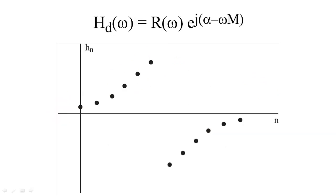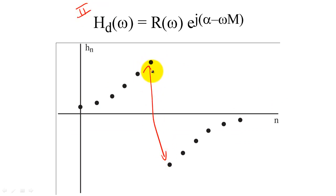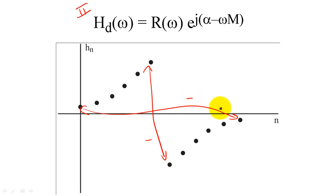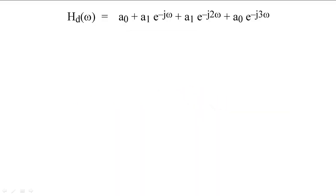To create a filter with generalized linear phase type 2, the filter coefficients must be oddly symmetric. For example, the last filter coefficient will have the same magnitude as the first coefficient, but with opposite sign.